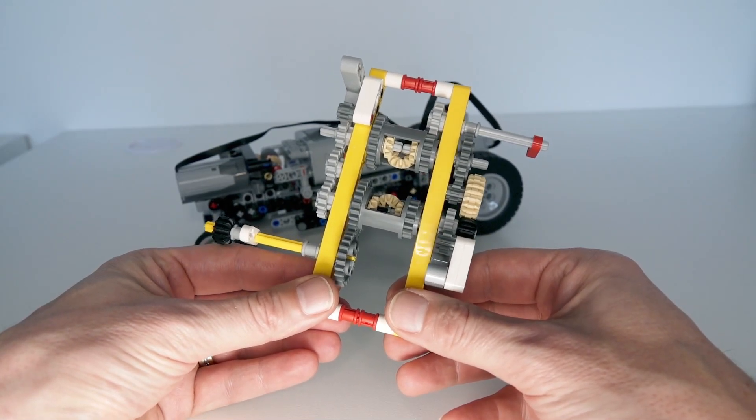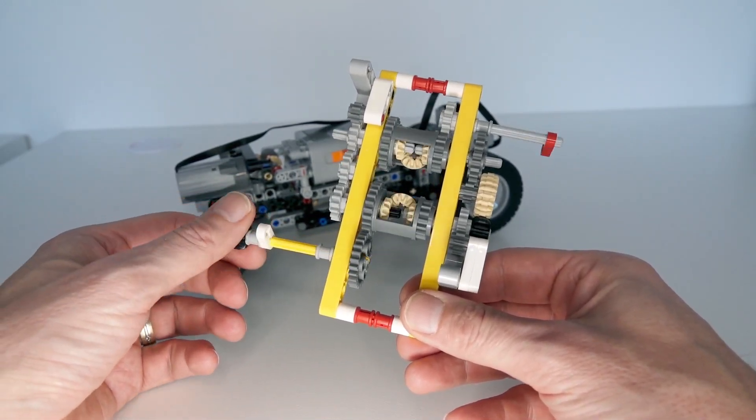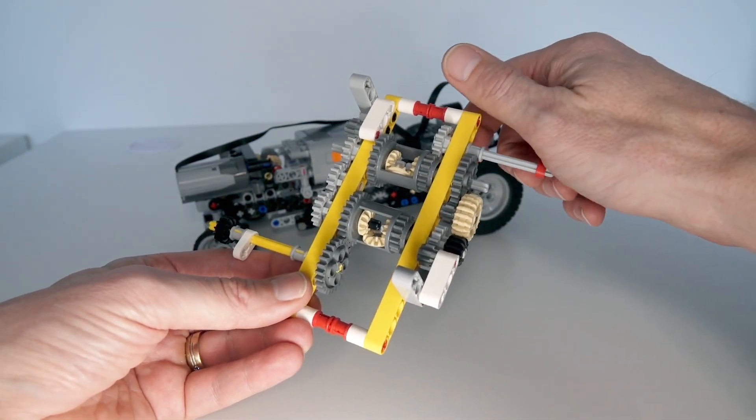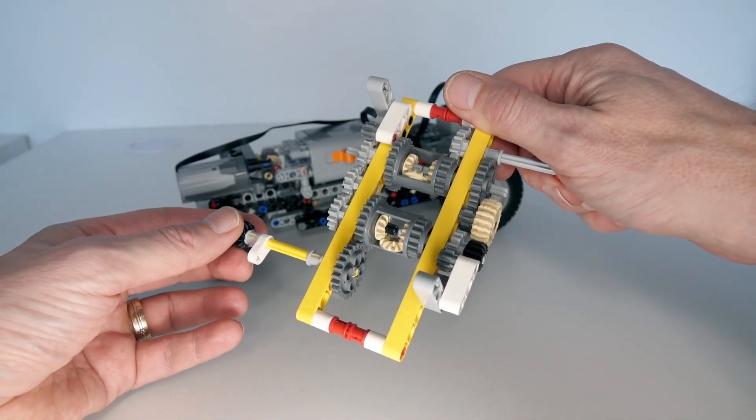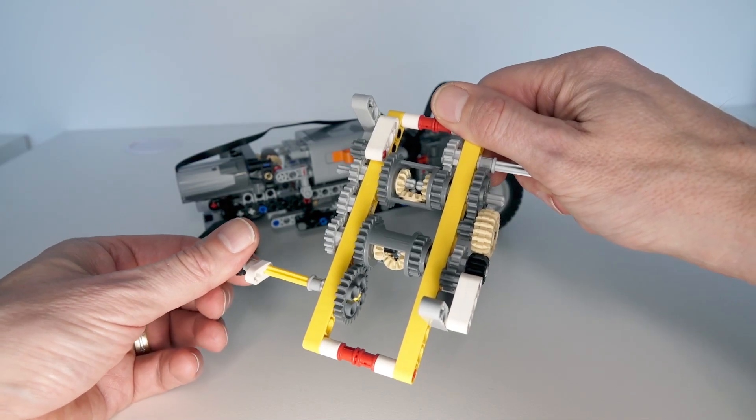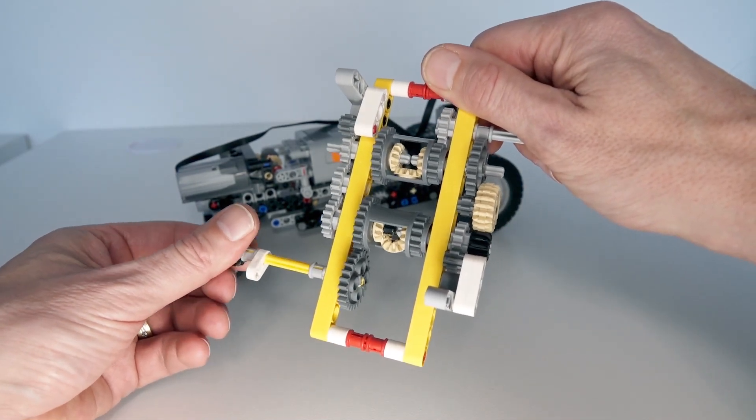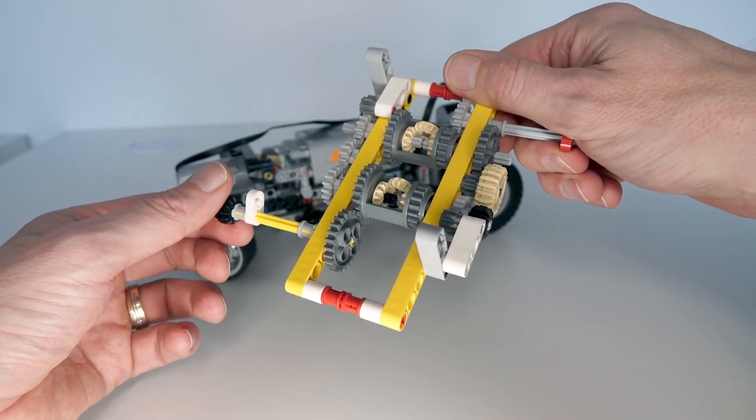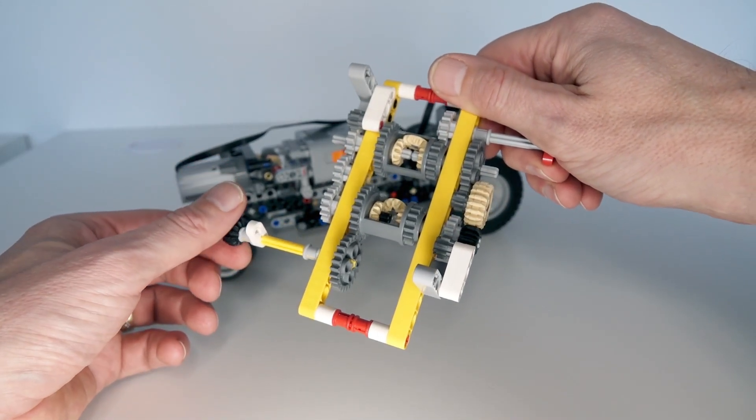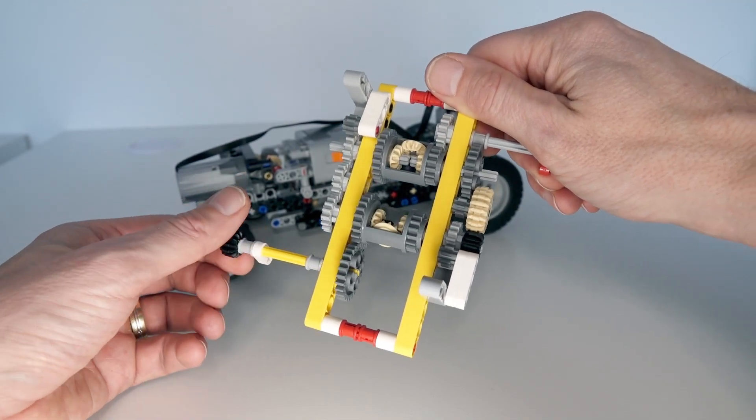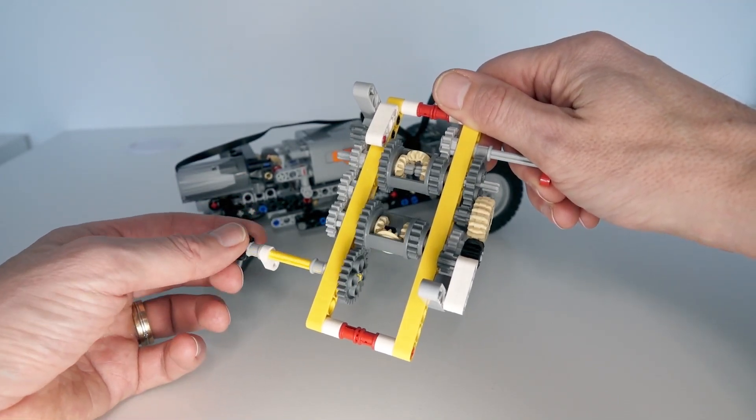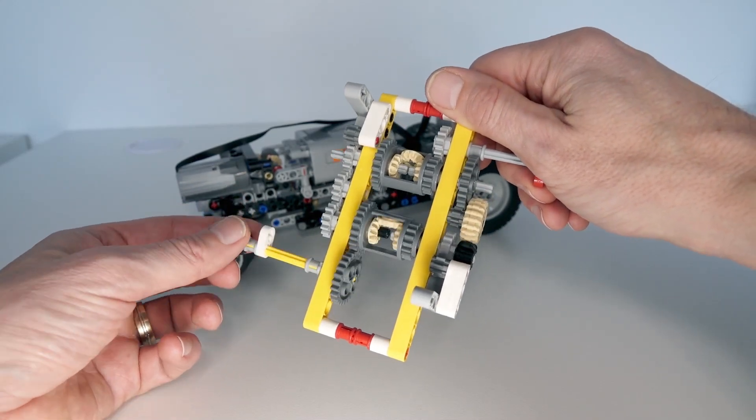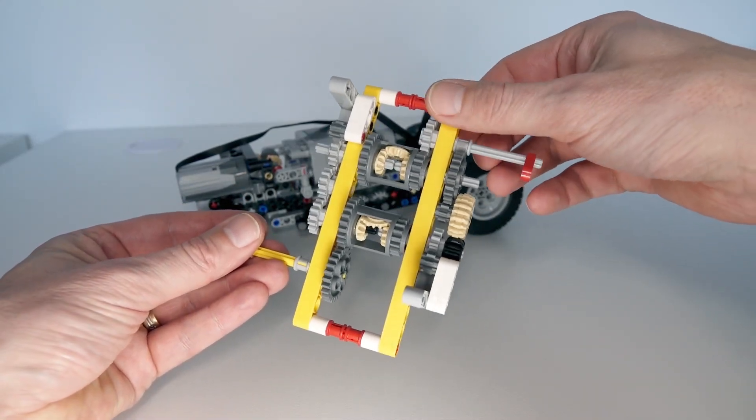But what I actually found when I built the car - it went forward fine, but it didn't actually go in reverse. And as it turns out, if you actually hold the output, then going forward you're getting full power, that locks up. We can't actually go forward. We can't turn the input when we're locking the output. But when we lock the output in reverse, there's actually another path through the gearing mechanism that allows it to kind of go backwards. And it doesn't take a lot of force on the output to stop it from going in reverse.